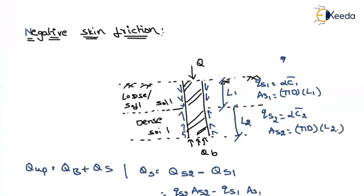We have to remember only one thing: if it is a negative skin friction, instead of resisting the load, the soil behaves like an externally applied load. That's why we have to remove that part from the resisting force, and subtract qs1 from qs2.